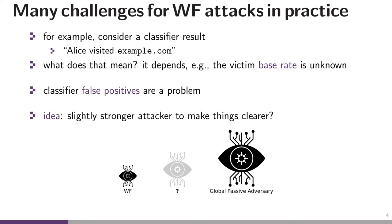So even the smallest false positive rate from the classifier would mean that, from the attacker's perspective, when the classifier says Alice visited example.com, it would always be wrong. We've had these debates in the website fingerprinting community for quite some time, and as luck would not have it, we've had a quite similar debate in society at large over the last half year around how effective COVID-19 antibody tests are — what it means for an individual, what it means for the population. A similar debate has been raging in the website fingerprinting community.